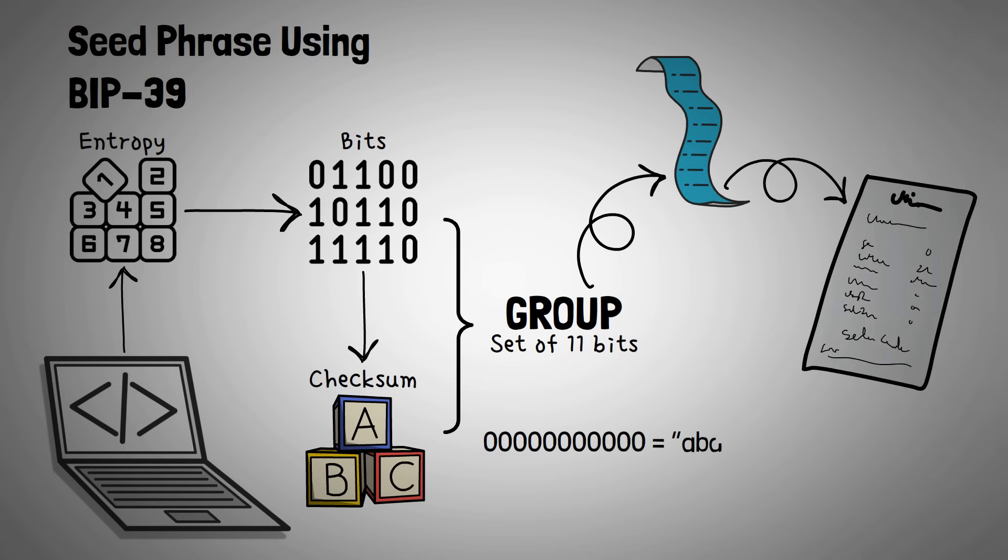For example, this list of zeros is abandoned. And this list of zeros with a one is ability, all the way to this list of ones, which is zoo. In this way, your seed phrase is actually a bunch of ones and zeros, but we group the ones and zeros together and then match each set to a word so that it's easy to write down all these ones and zeros without mistakes.